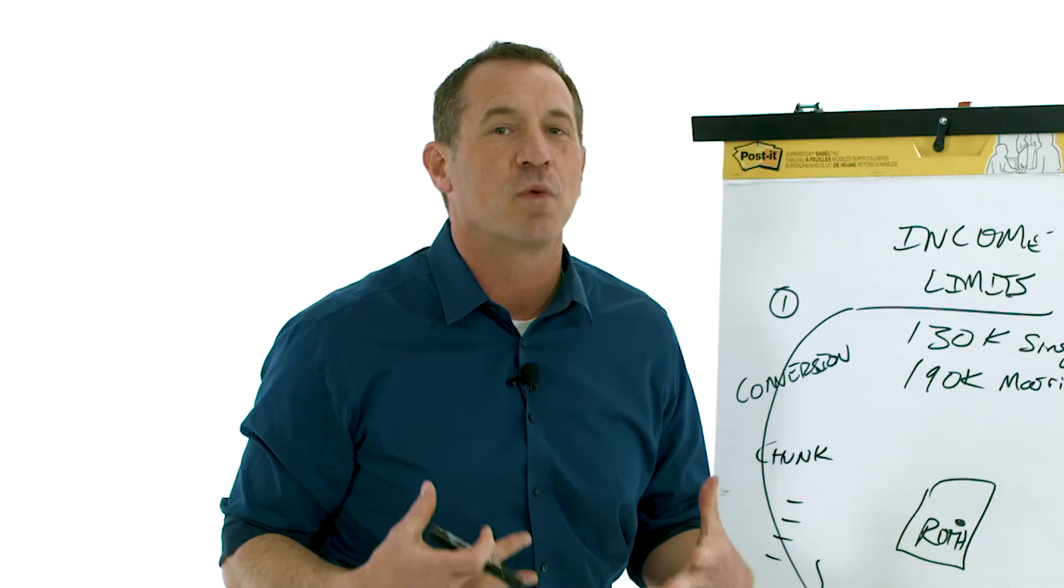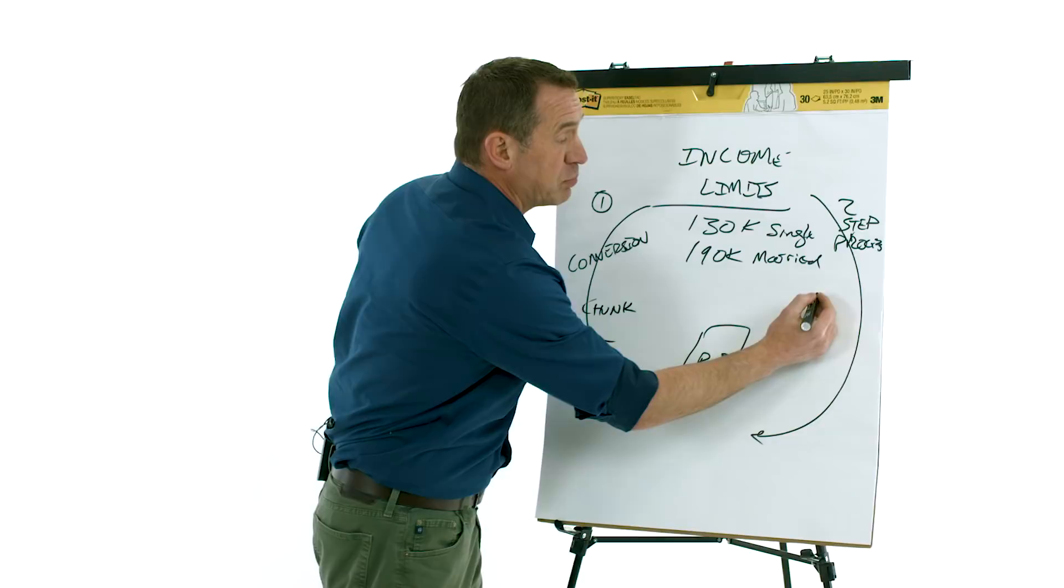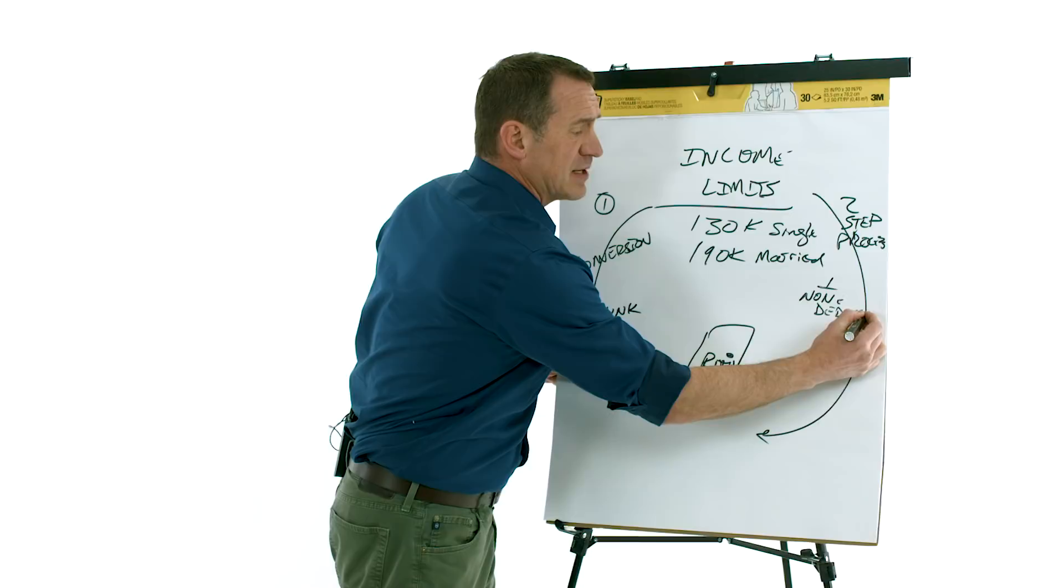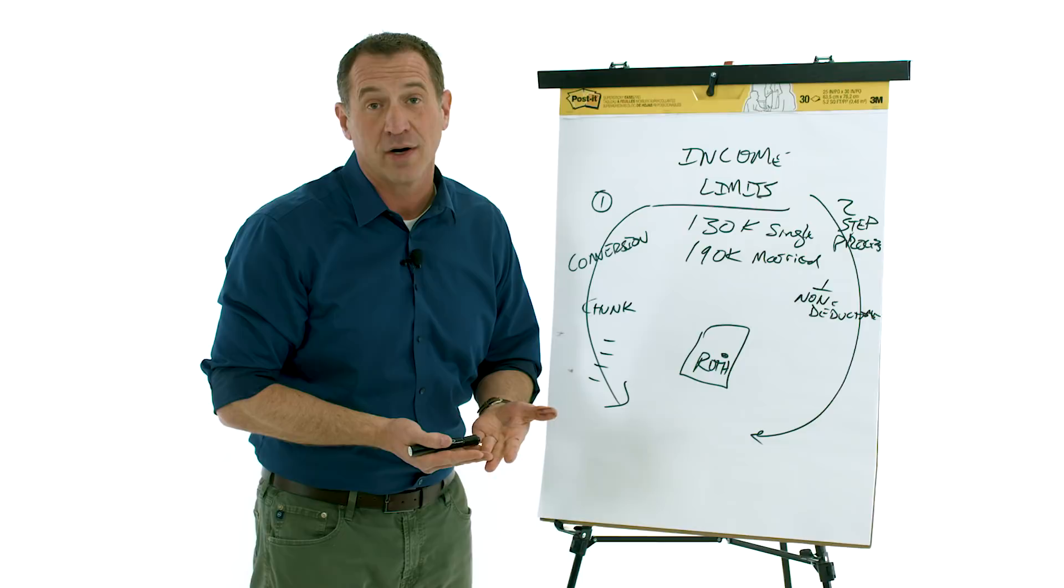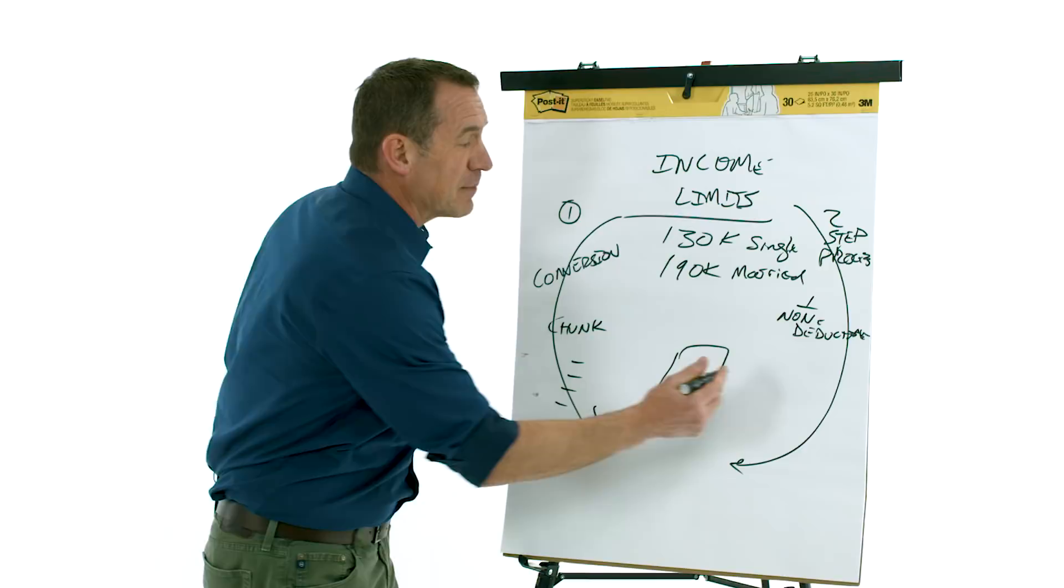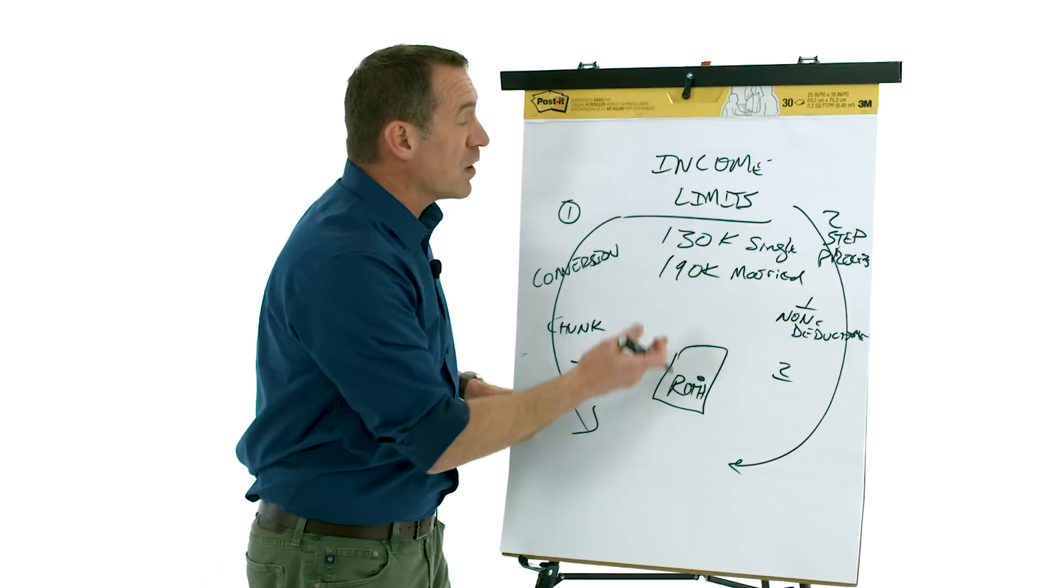Now, the two-step process is really where this backdoor Roth IRA evolved. And that is where you make a non-deductible contribution - that's step one. You make a non-deductible contribution to an IRA. Now you may say, well, can I do that? Yeah, you can at any income level. See, if you make more than $130,000 single, $190,000 married, you start to phase out and you can't make a contribution to a regular IRA and get a write-off. But you can still contribute. But why would you do that? Because on step two, you convert it to Roth.